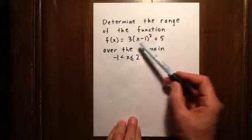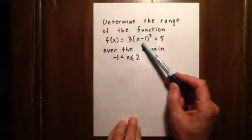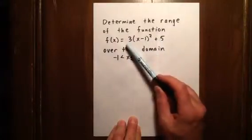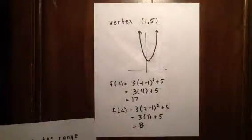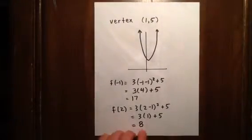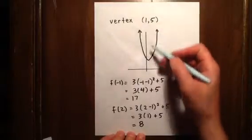This is a function given to us in vertex form. Clearly, the vertex of this parabola is (1, 5), and it opens up because 3 is positive. So we can graph that. Vertex of (1, 5) down here, and it opens up.